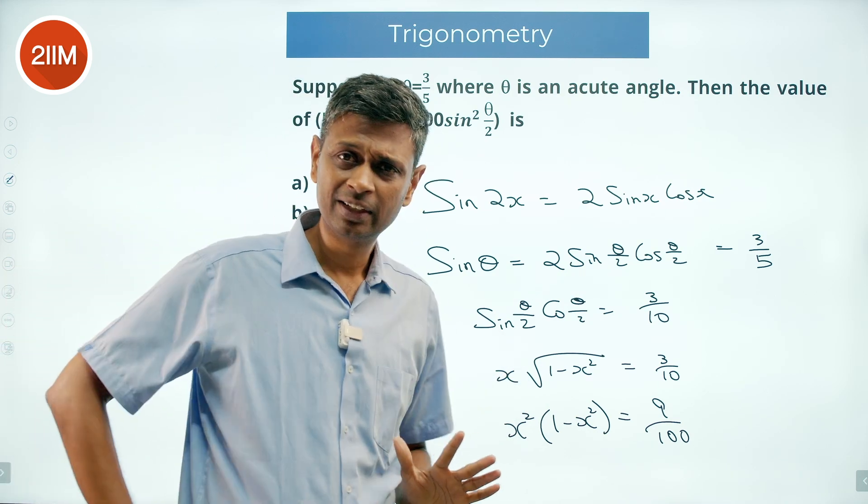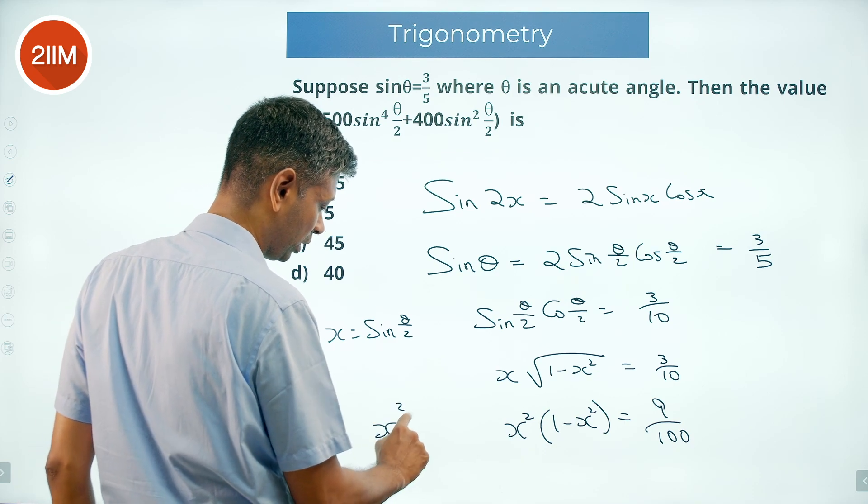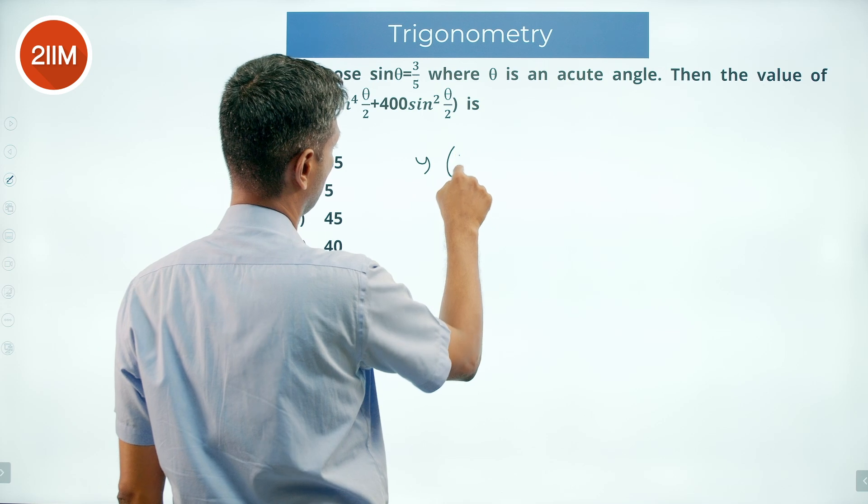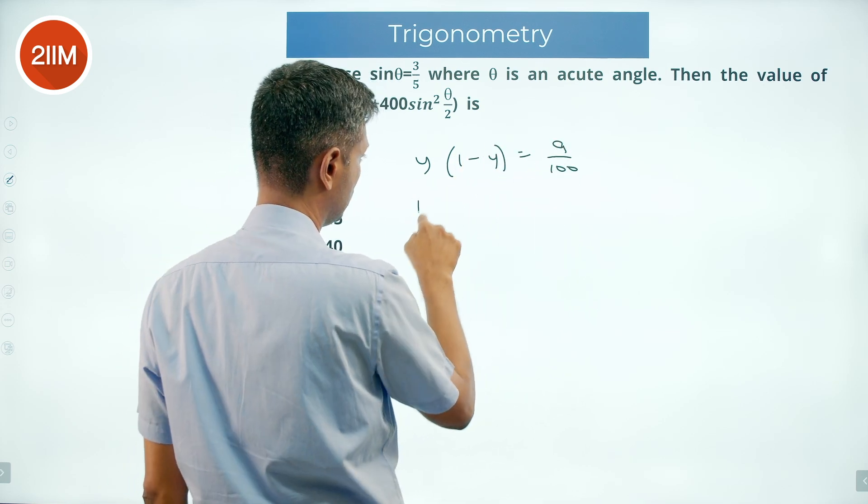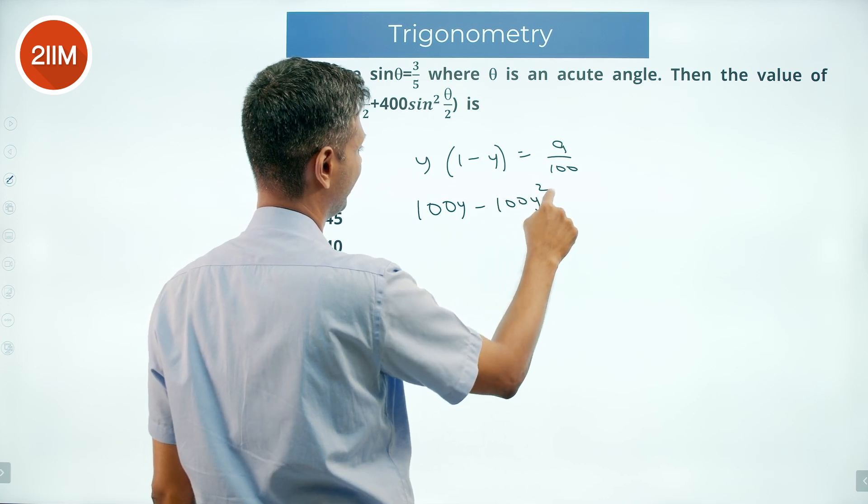To solve this quadratic and get x square, I'm going to put x square equal to y. So y into 1 minus y is 9 by 100, which gives 100y minus 100y square equals 9.